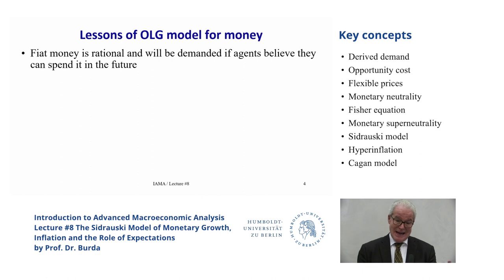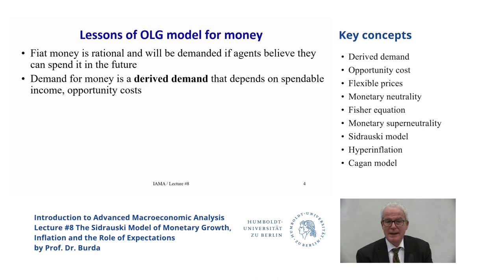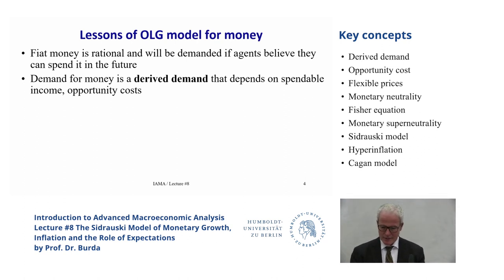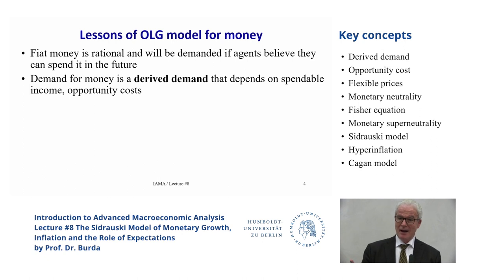Cryptocurrencies could be a money — people could use many different types — you just need someone to take them when you want to spend them. We say the money demand is a derived demand: it comes from its usefulness in fulfilling some constraint, like having to pay for goods in cash. Or you get utility from saving shoe leather — you don't want to keep going to the bank, so you keep some cash in your pocket. That's the trade-off, and we talk about opportunity costs.